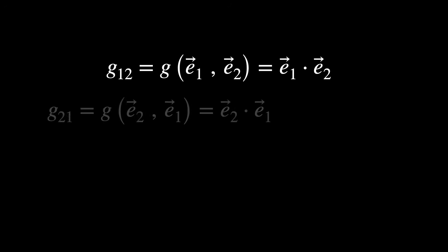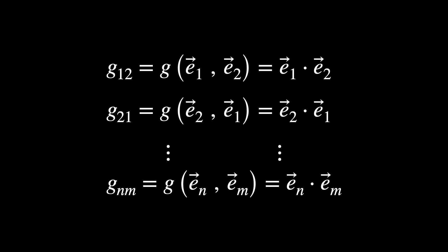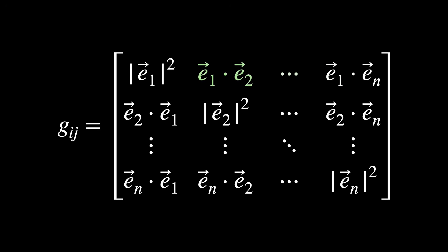The off-diagonal entries are inner products between different basis vectors. These dots here represent the inner product under the Riemannian metric. So they measure how non-orthogonal the coordinate directions are at a point. And now the matrix becomes this.